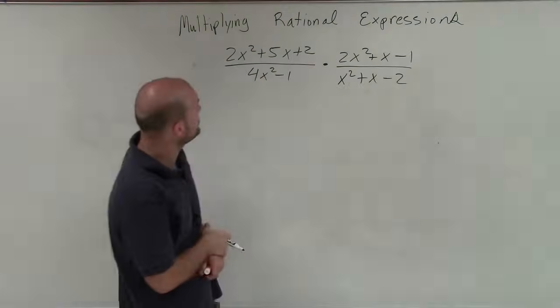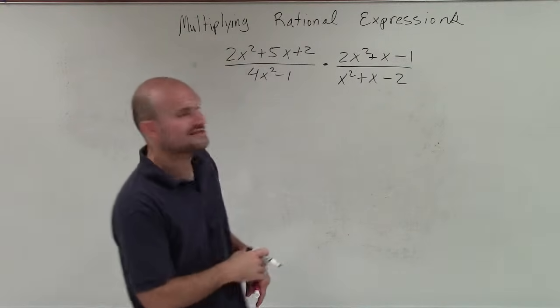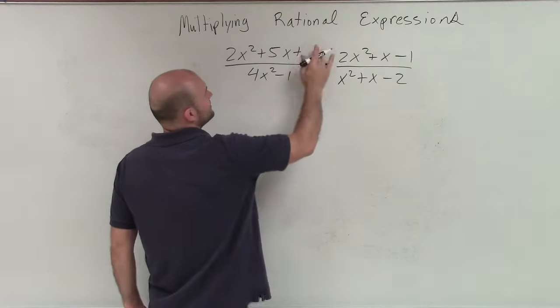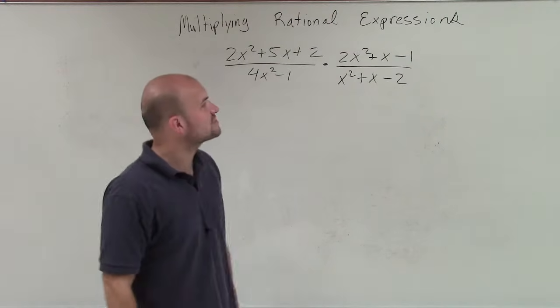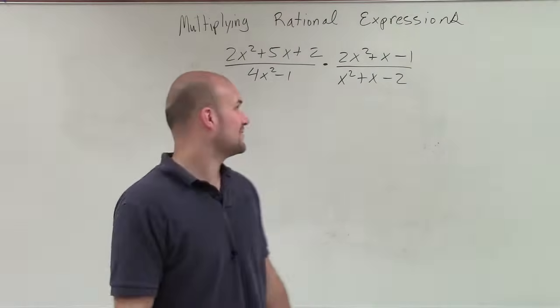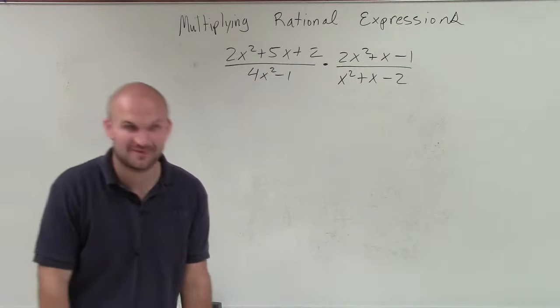Welcome. So what we have here is 2x squared plus 5x plus 2. That 2 is kind of weirdly written, but I'll redo that. Divided by 4x squared minus 1 times 2x squared plus x minus 1 divided by x squared plus x minus 2.